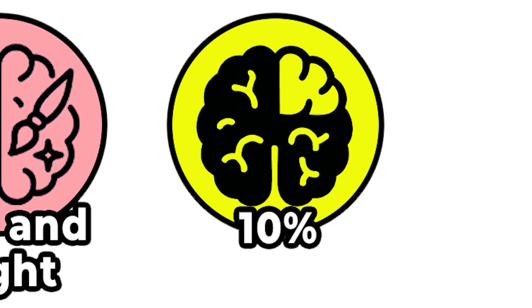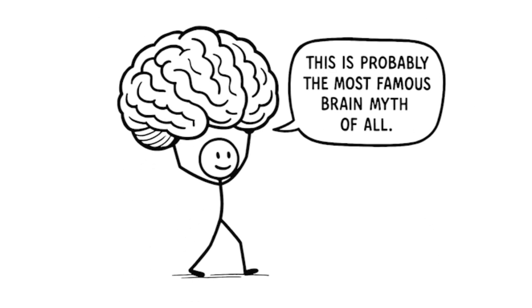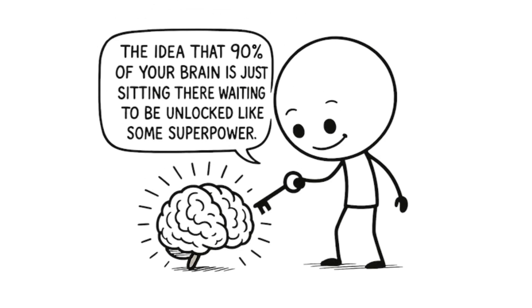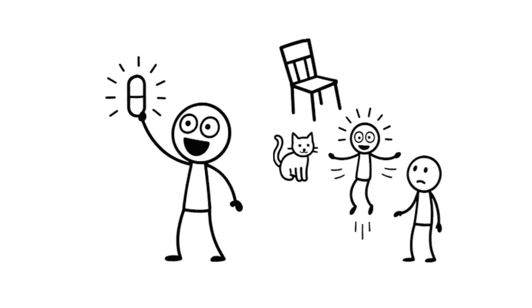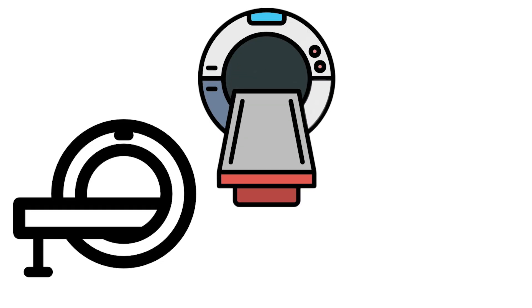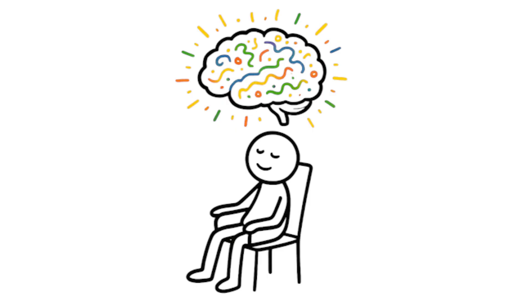We only use 10% of our brain. This is probably the most famous brain myth of all. The idea that 90% of your brain is just sitting there waiting to be unlocked like some superpower. Hollywood made entire movies about this. Take a magic pill and suddenly you're telekinetic. Modern neuroimaging techniques like fMRI, PET scans, and EEG show activity across the entire brain even during rest.